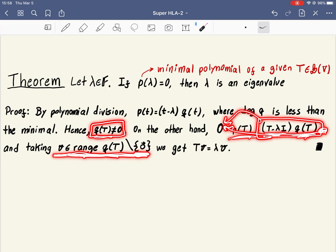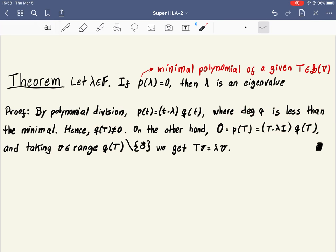And any vector in the range of q of t, so we put some u here, we get v here, when we apply t minus lambda i to v, we must get zero, because this operator here is zero. So we must have t v equal lambda v, so we found an eigenvector corresponding to lambda, so lambda is an eigenvalue.